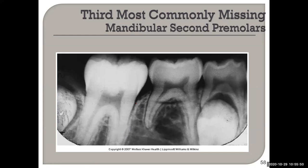The second premolar is the third most common missing tooth. In private practice, we want to go from a size-one sensor to a size-two sensor as soon as the child can tolerate it, because this is what we're looking for. We'll advise the parent that the tooth is missing and they're going to try to retain the primary tooth as long as possible, until eventually root resorption will occur. A patient can retain a primary second molar until age 40.